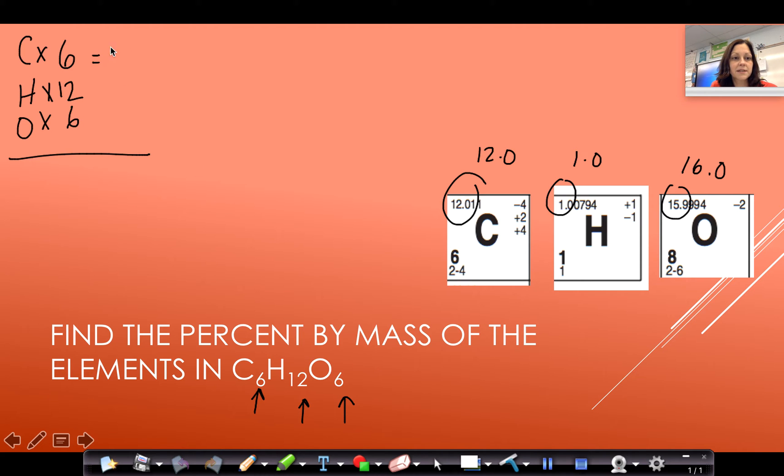And we're going to do that by taking the masses from the table and multiplying by the subscripts. So C times 6 is going to give us 12.0 times 6, which is 72.0. H times 12 is going to be 1.0 times 12, which is 12.0. And O times 6 is going to be 16.0 times 6, which is going to give us 96.0. Once we have these numbers, we add them up on the calculator. And we have our gram formula mass or our molar mass.